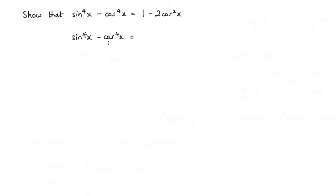Well, I can see straight away that this is the difference of two squares. It's actually sine squared x plus cos squared x multiplied by sine squared x minus cos squared x.